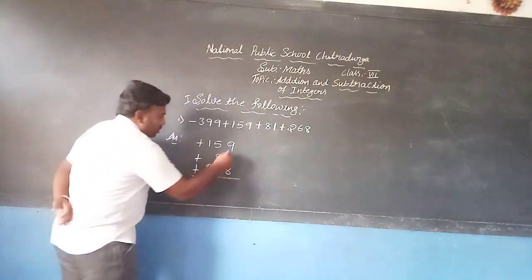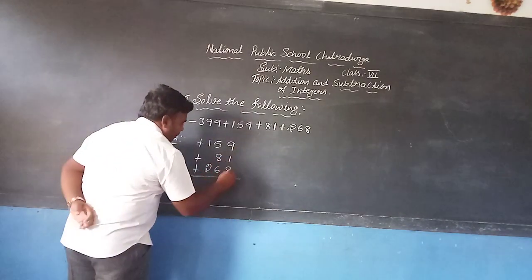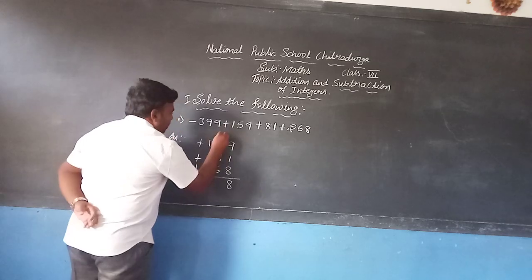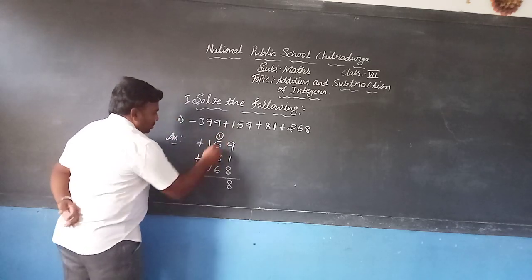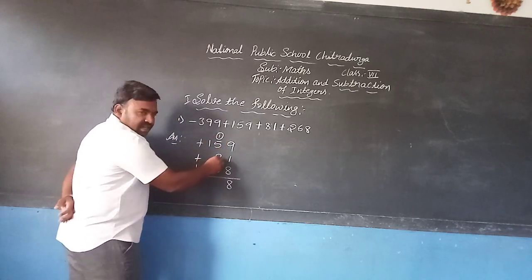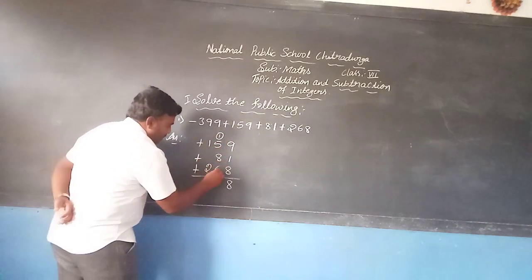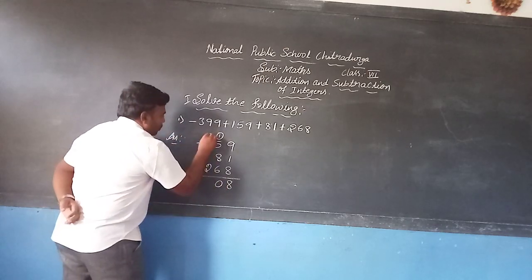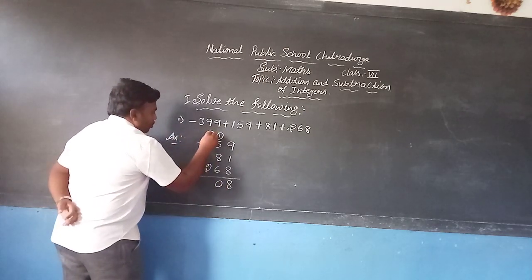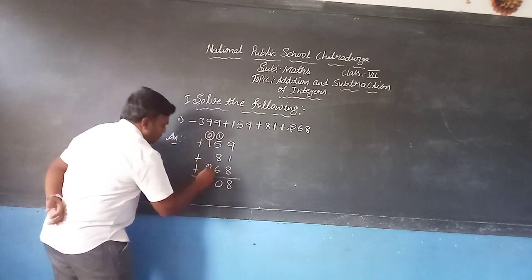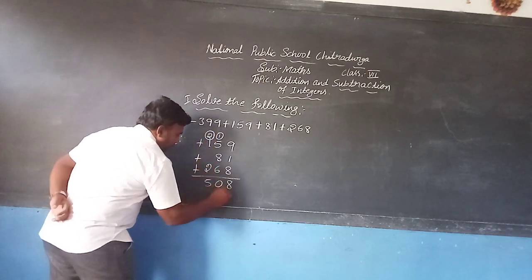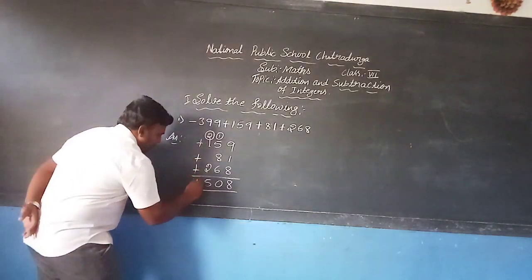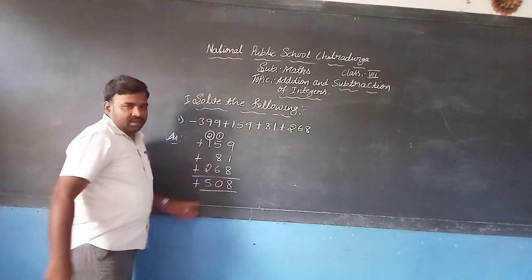Now find the sum. 9 plus 1 is 10, 10 plus 8 is 18 — carry 1. 1 plus 5 is 6, 6 plus 8 is 14, 14 plus 6 is 20 — carry 2. 2 plus 1 is 3, 3 plus 2 is 5. After finding the sum, attach the same sign.